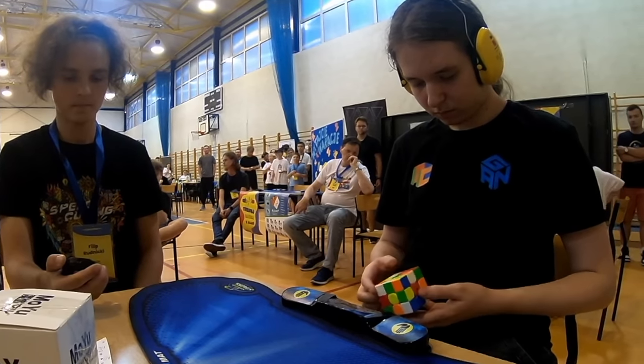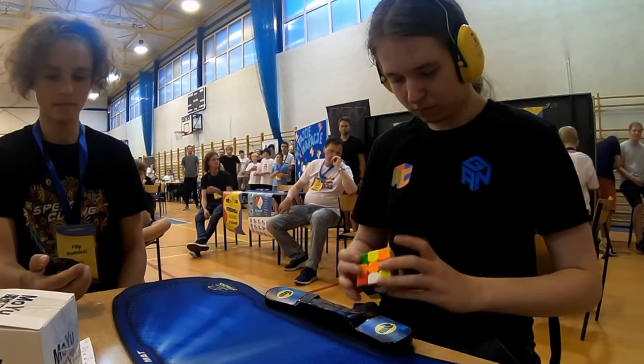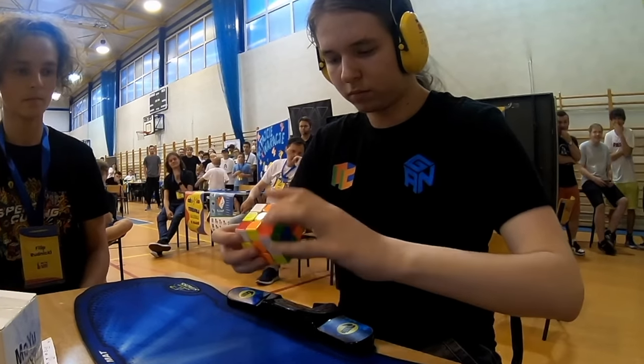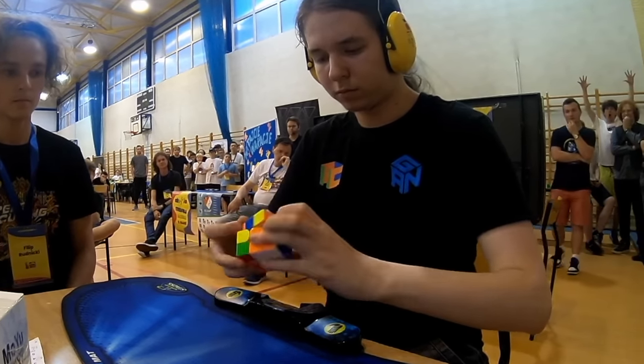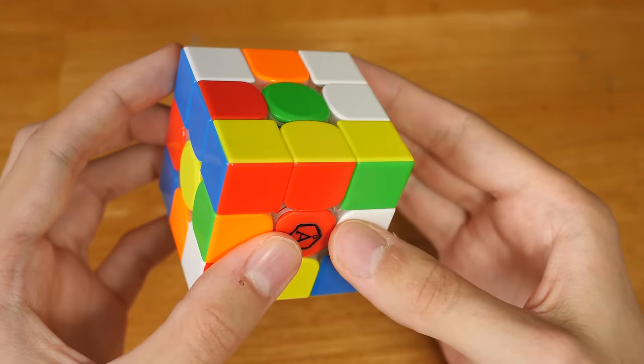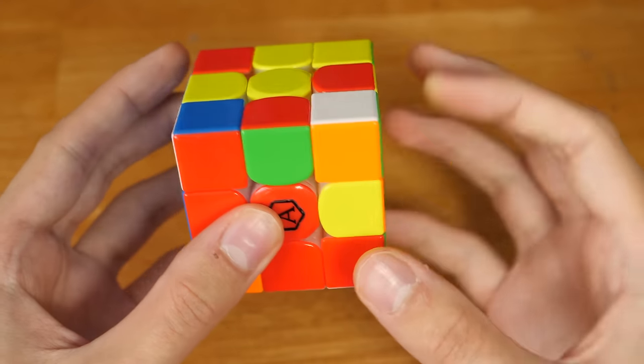The world record average he thought he had was taken away, and now for the second time, he needs to clutch a sub-5 on demand to get the first ever sub-5 average. Today I'll be breaking down Timon Kalashinsky's 4.86 world record average, the first sub-5.